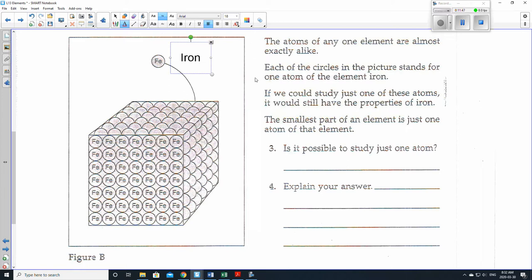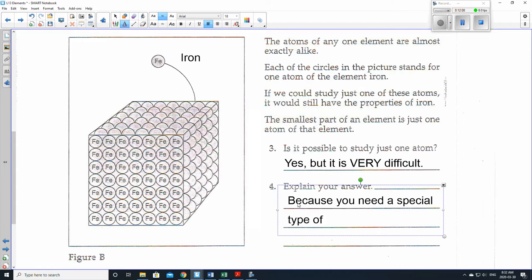So is it possible to study just one atom? I would actually say yes. But it is very difficult. Why is it difficult? Because you need a special type of microscope. That special type of microscope is called an electron microscope. Only electron microscopes. And it doesn't mean that we're studying electrons and we have an electron microscope. An electron microscope uses electrons almost as like light rays, so to speak. And it shoots electrons at the surface of an item to get really, really clear images of very small things.